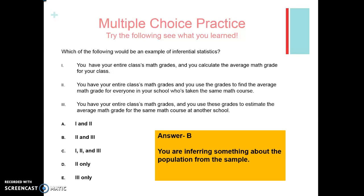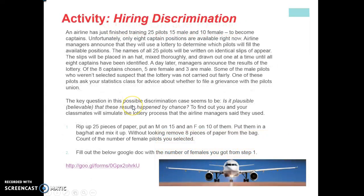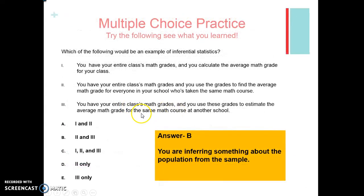This one is a little bit tricky. In option B, we're inferring something about the population from the sample — we have a sample of our entire math class grades and we're making an inference for everybody in the school. In the third option, we have our entire math grades and we're making an inference for somebody at another school. So we're taking that sample and making a prediction about the population.